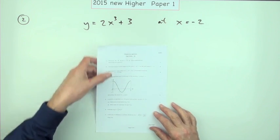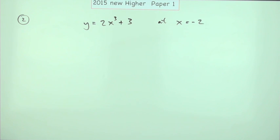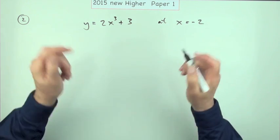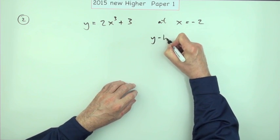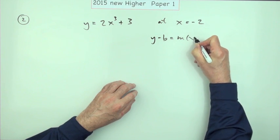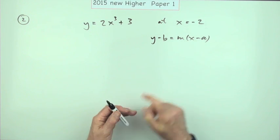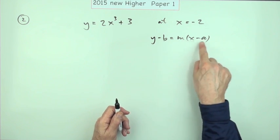So find the equation of the tangent - that's the equation of a line. You'll be looking to use y minus b equals m times x minus a, meaning you'll need the values of these three parameters, these three numbers to put into the equation.